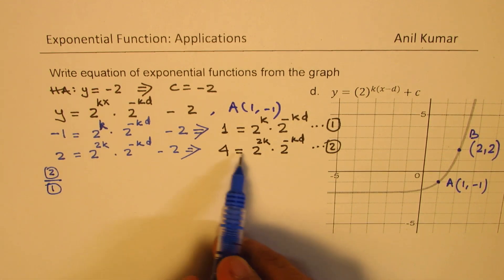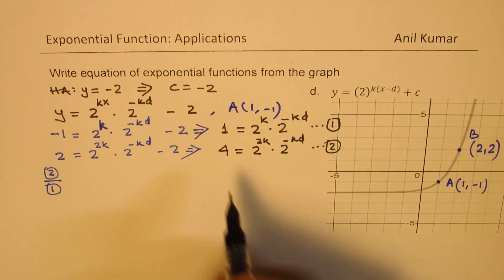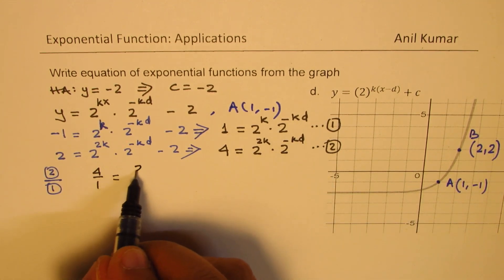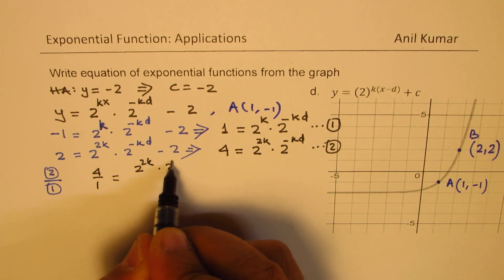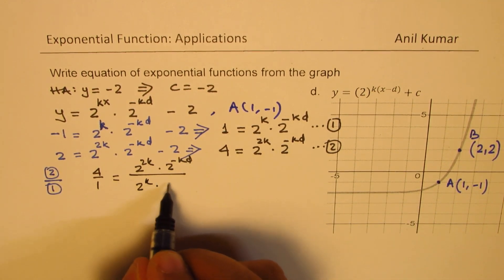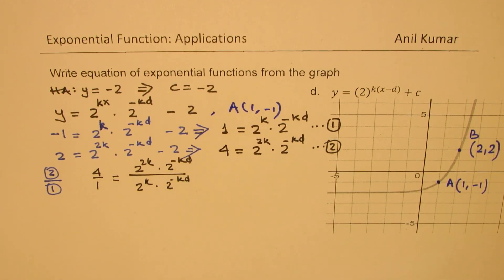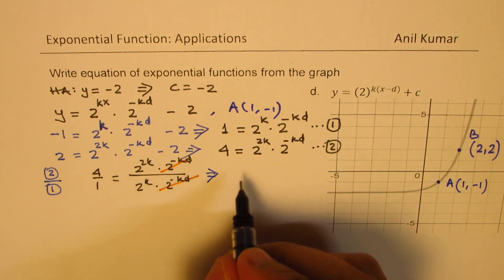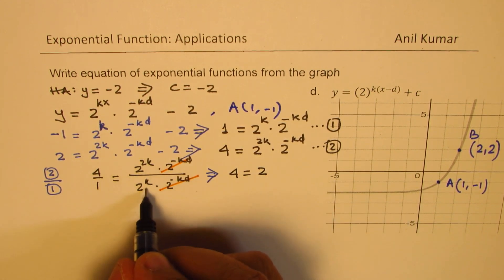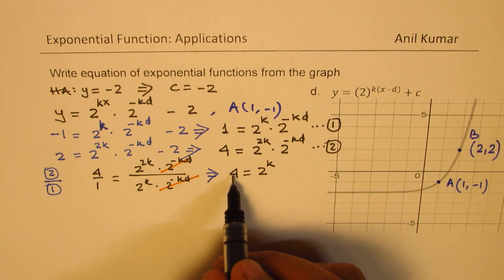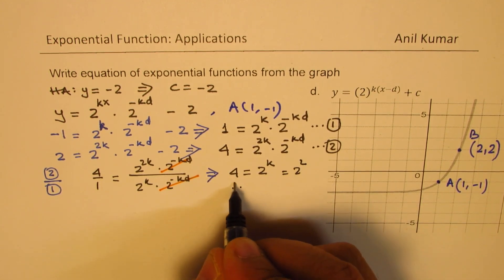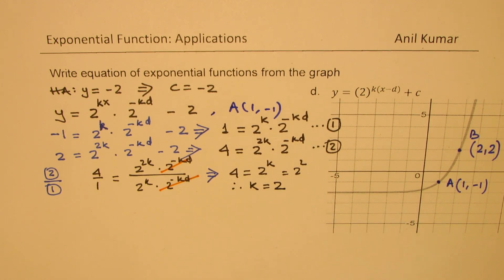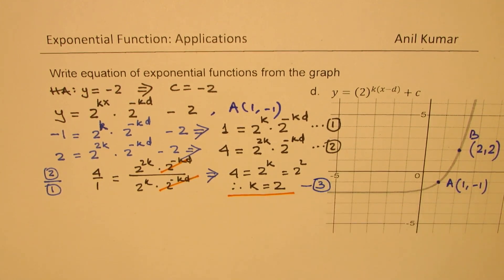Dividing equation 2 by equation 1, the 2 to the power of minus kd terms cancel. We get 4 over 1 equals 2 to the power of 2k minus k, which is 2 to the power of k. Since 4 equals 2 to the power of 2, comparing exponents gives k equals 2. This is equation 3.